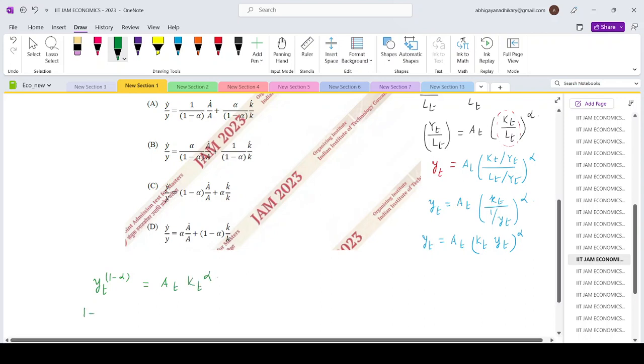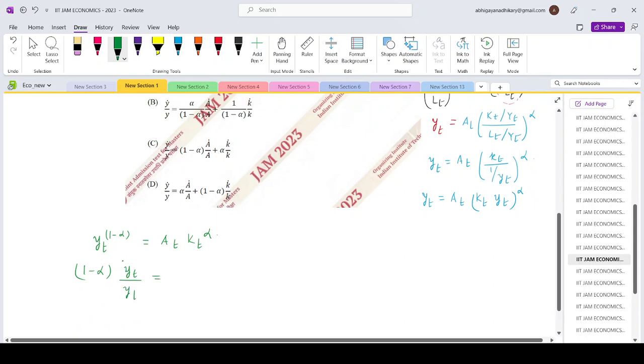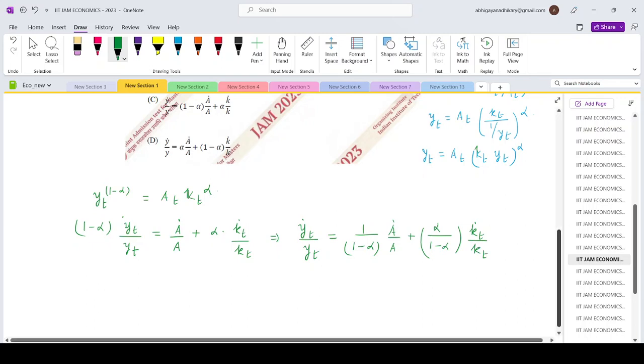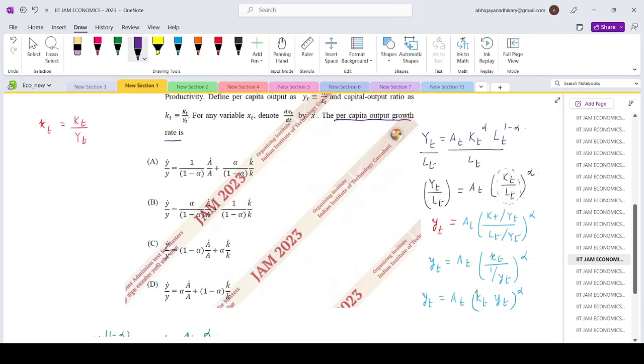So if you take log and differentiate, 1 by alpha Yt dot by Yt equals A dot by A plus alpha times small Kt dot by A dot. So small Yt dot by Yt is 1 by 1 minus alpha A dot by A plus alpha by 1 minus alpha small Kt dot by small Kt. And if you look at the options that is matching with option number A. Thank you.